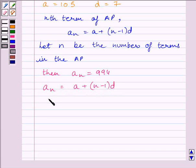We will substitute for a_n, 994. We will substitute for a, 105. n is unknown and d is equal to 7. So we will substitute for d, 7.